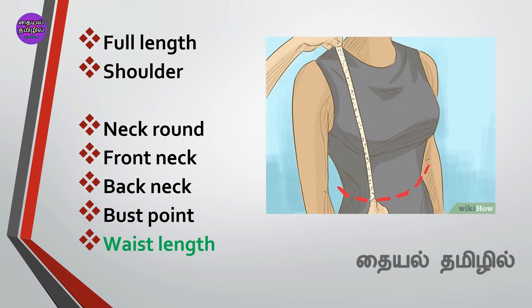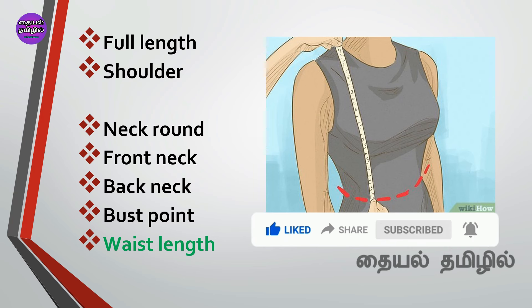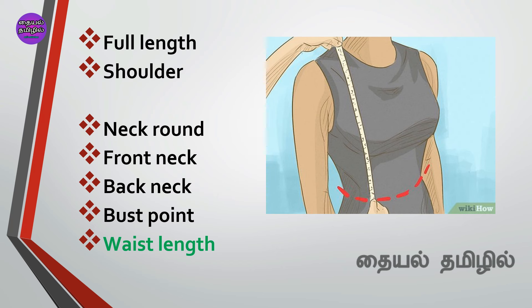This is the waist length. The waist length is added at the shoulder, and the waist round is added at the waist round. This waist length measurement is added in the waist length. This is the waist length maximum value.